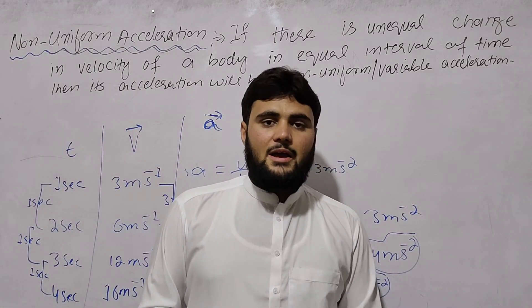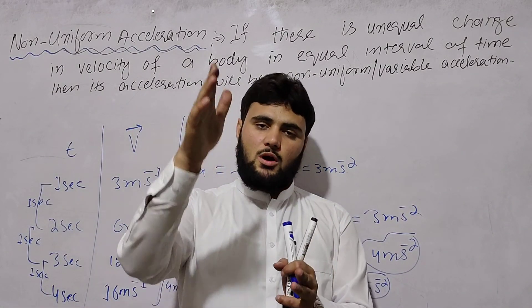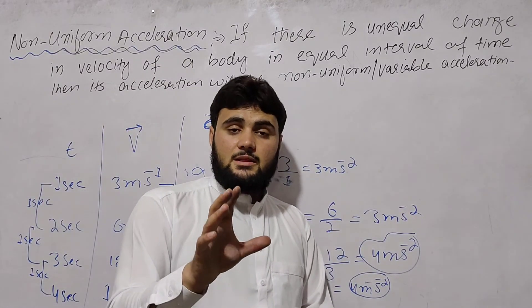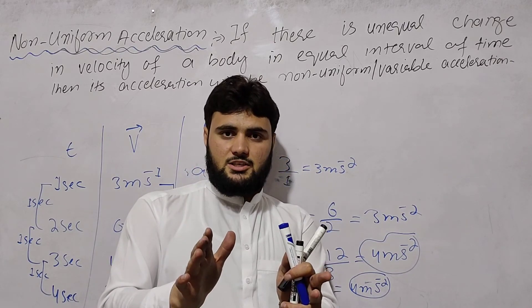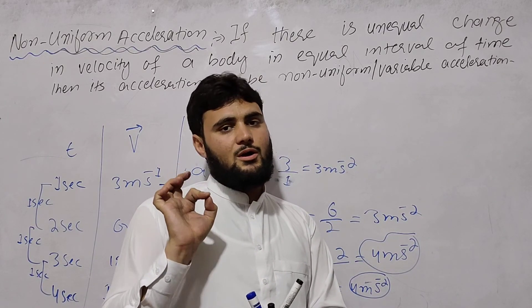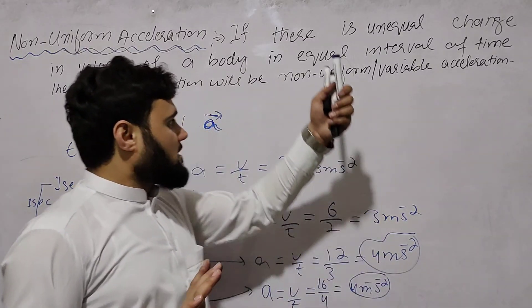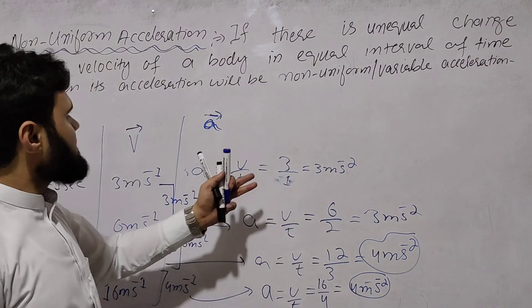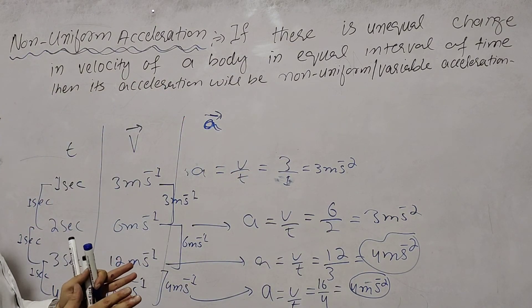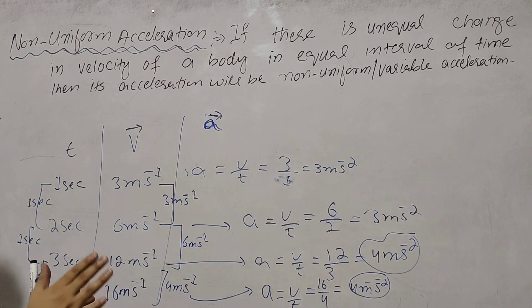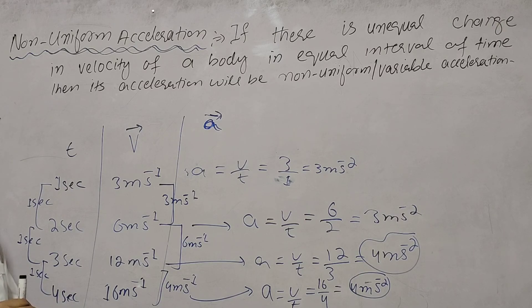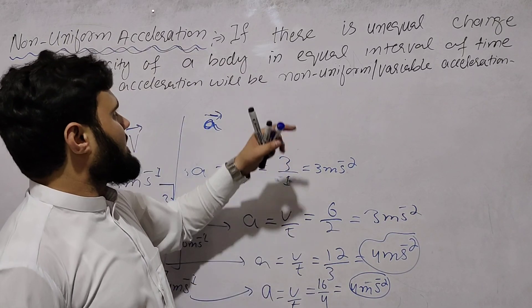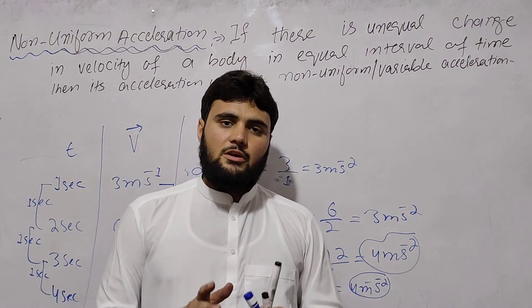The acceleration values are 3 meters per second squared, then 3 meters per second squared, then different values. Since the accelerations are not equal, this is non-uniform or variable acceleration. If there is an unequal change in velocity of a body in equal intervals of time, then its acceleration will be non-uniform acceleration or variable acceleration.